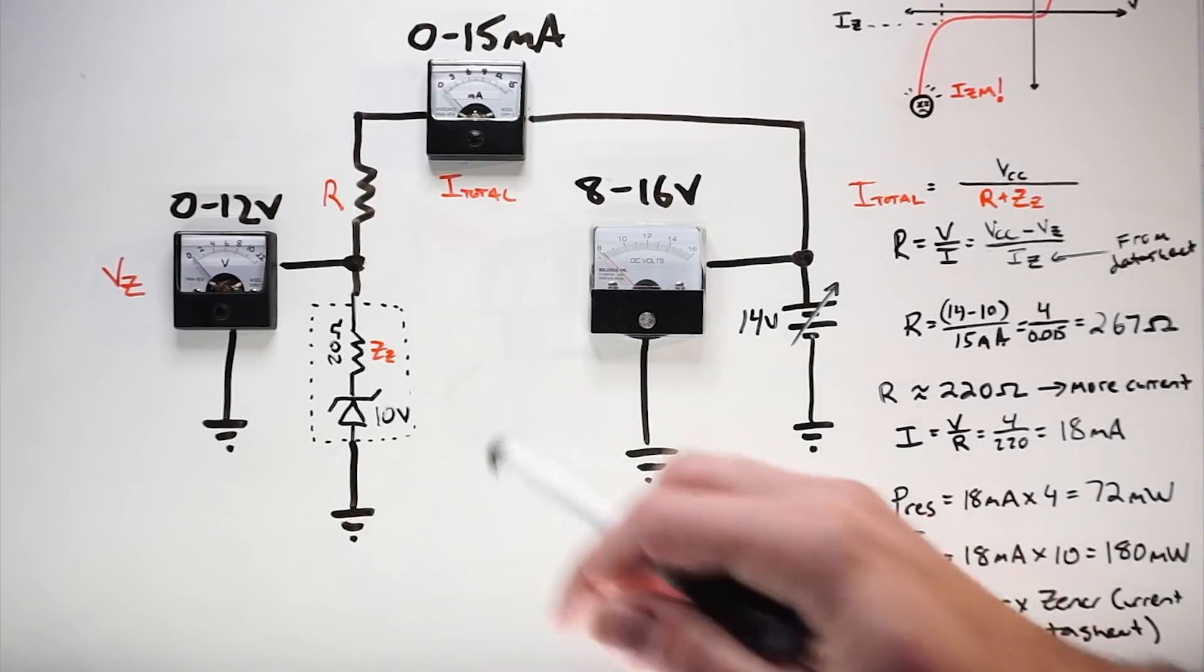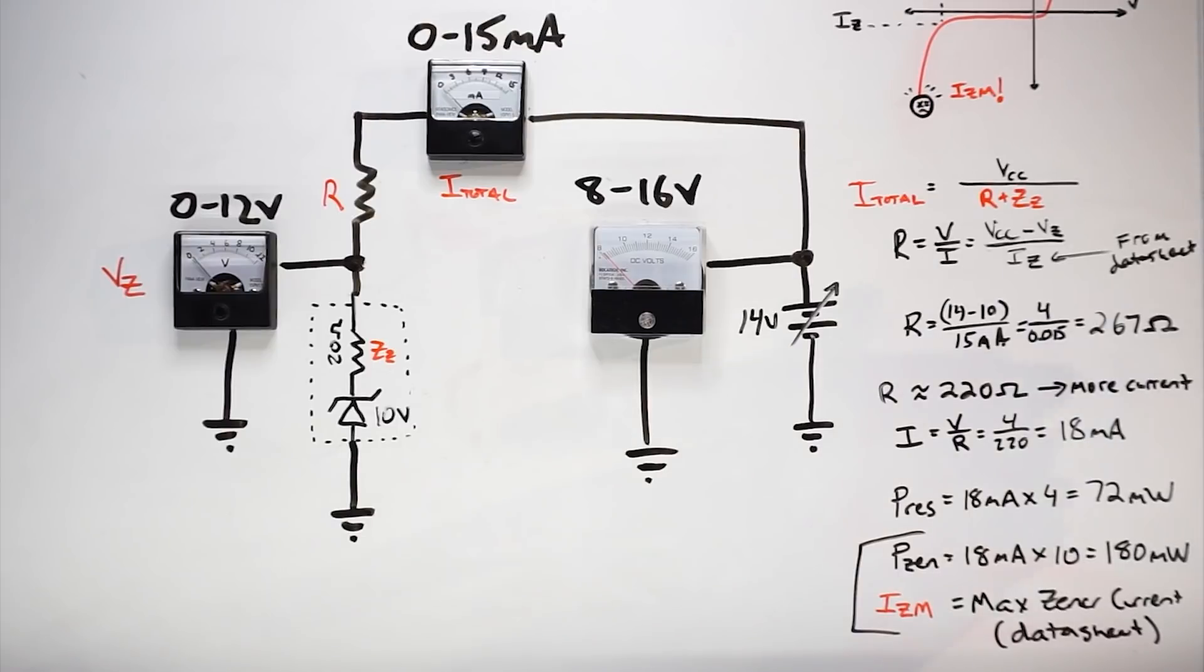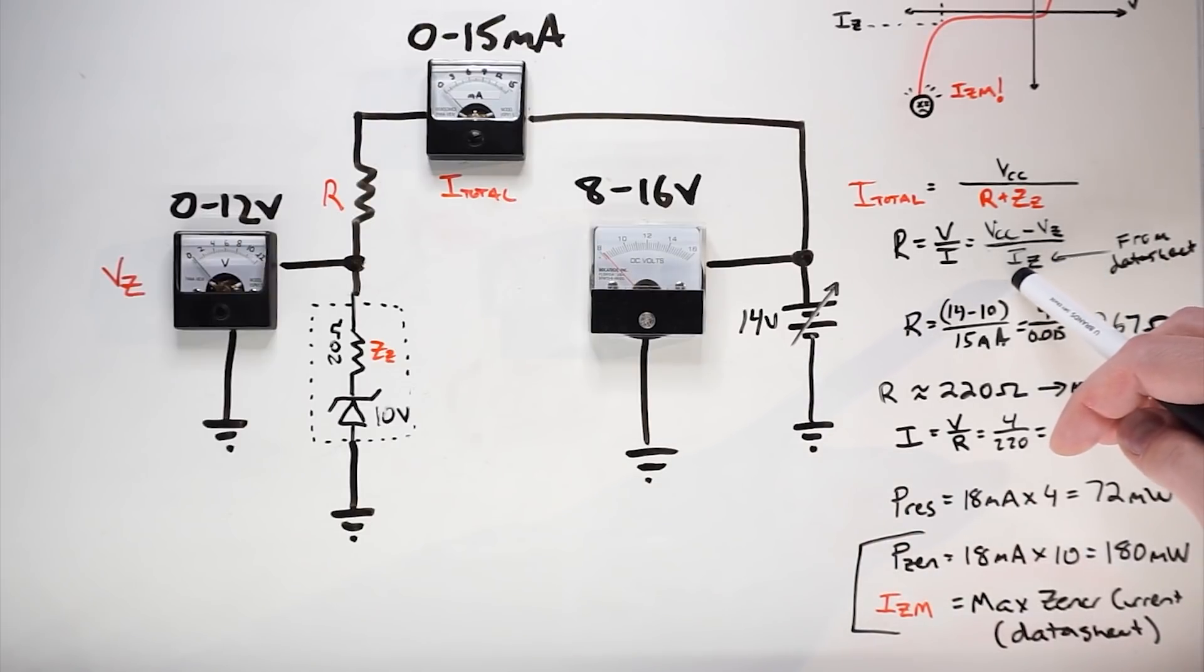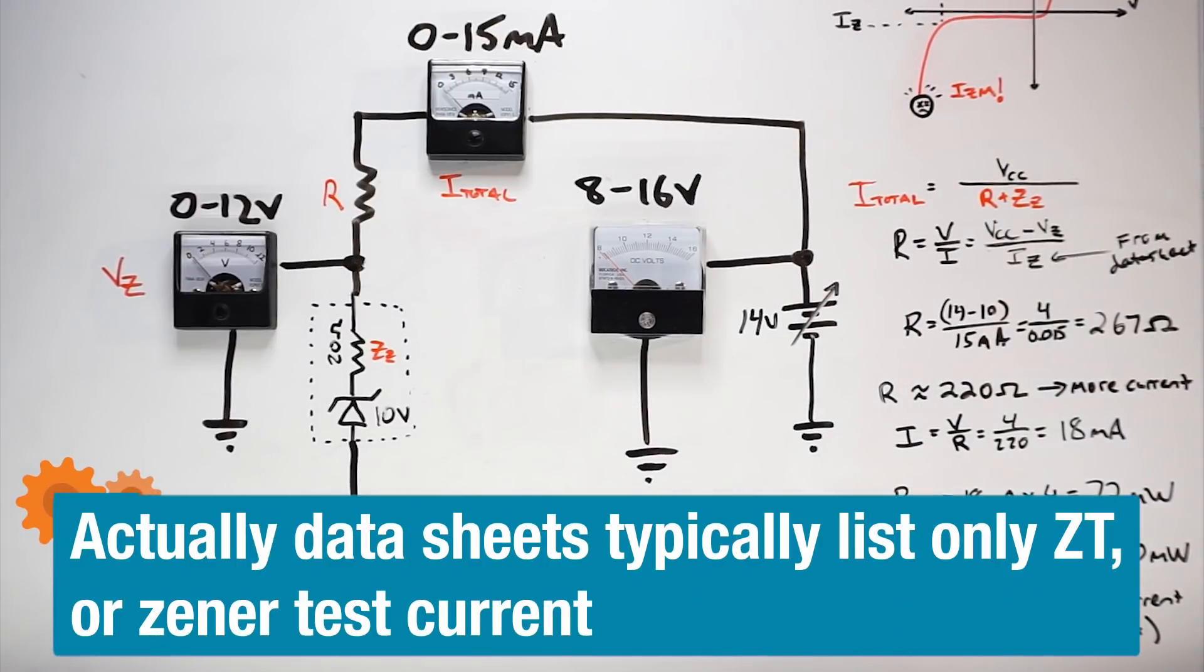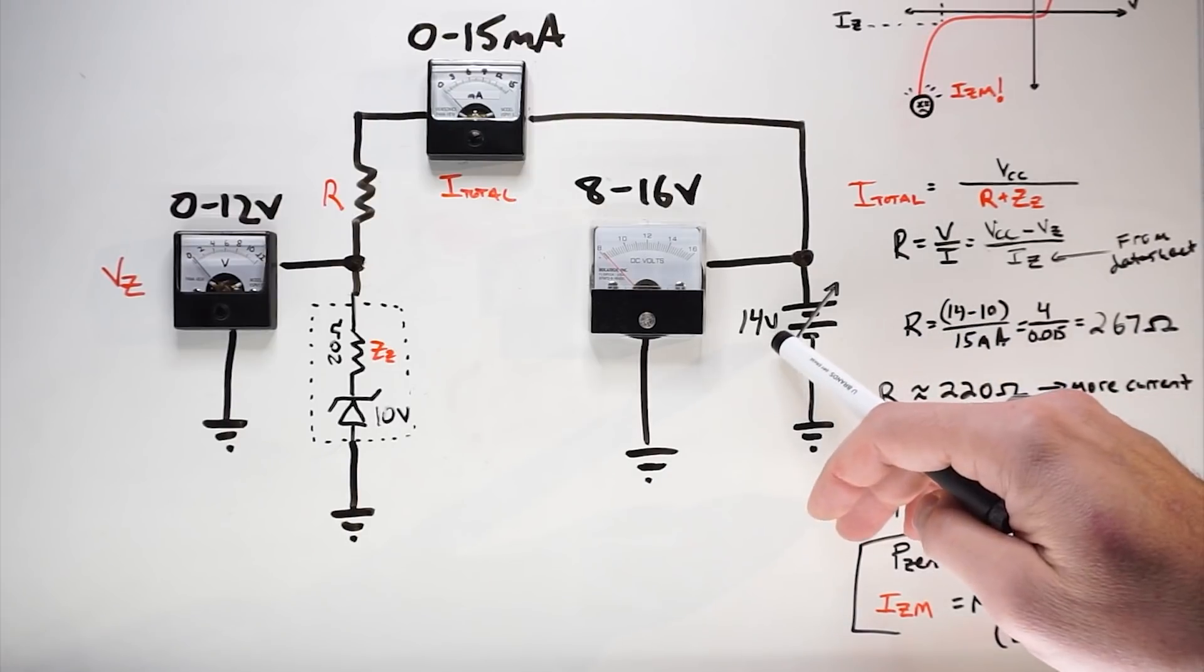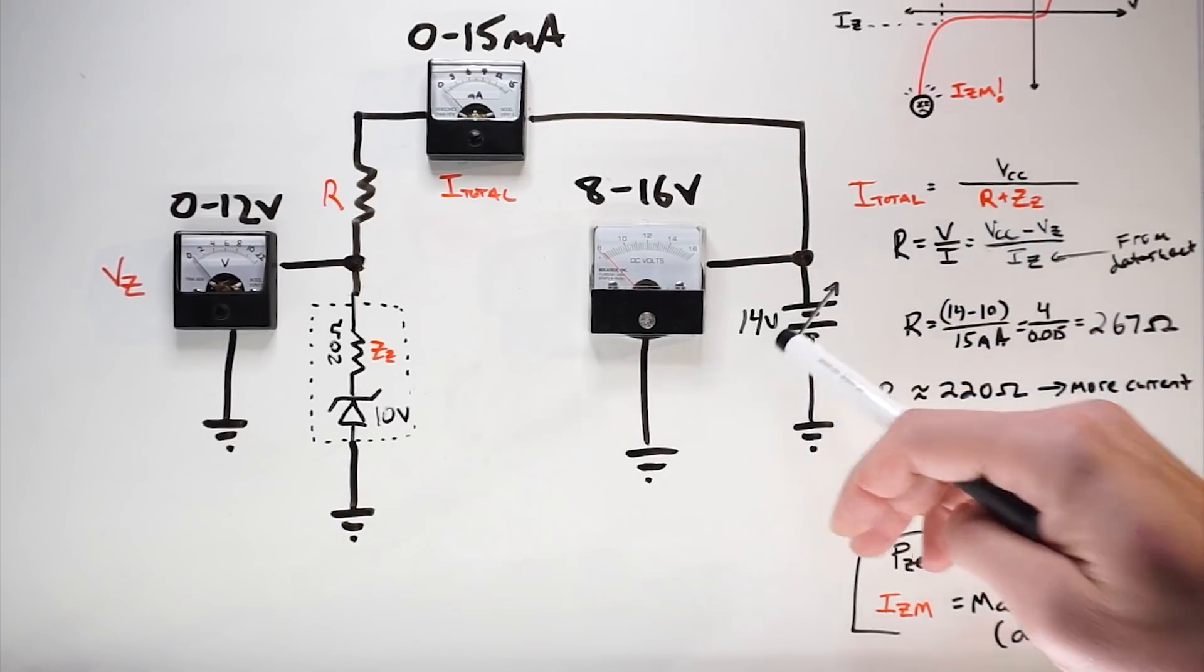So the next question is how do we select the resistor for this circuit? Well, it's actually not that difficult. Resistance is equal to voltage divided by current. We take the supply voltage, subtract the Zener voltage across this guy, and divide it by the minimum Zener current if you wanted to operate right at the knee. And that comes from our datasheet. I want to add a little bit more current so that I'm in this more linear region. So let's look at that. Resistance equals our 14 volts that we're supplying here under normal conditions, that's my constraint, minus the 10 volts. That gives us four divided by 15 milliamps, which equals 267 ohms.